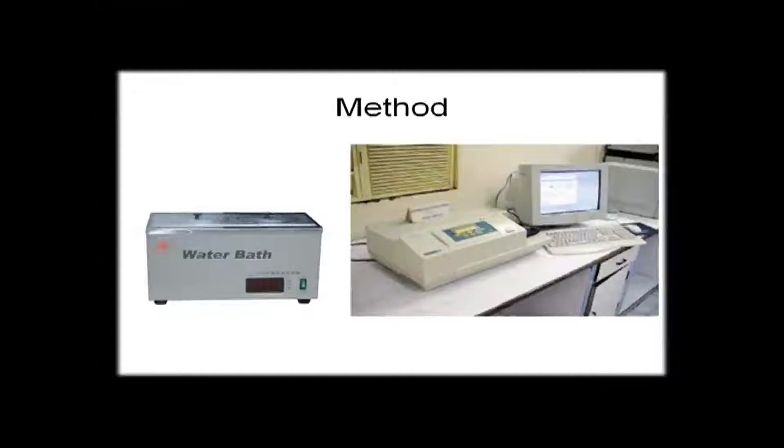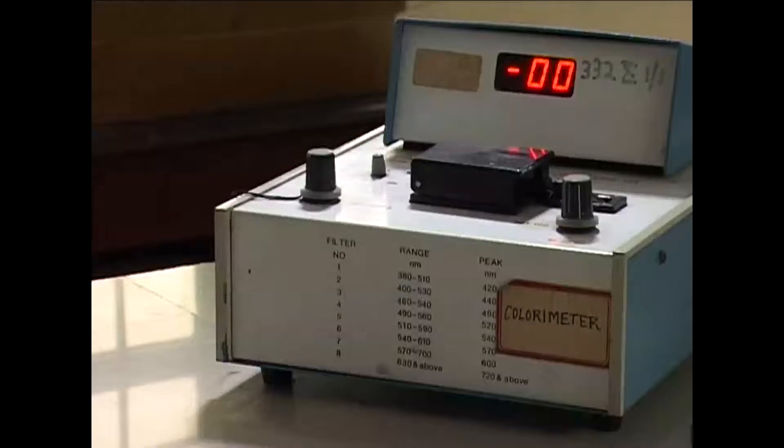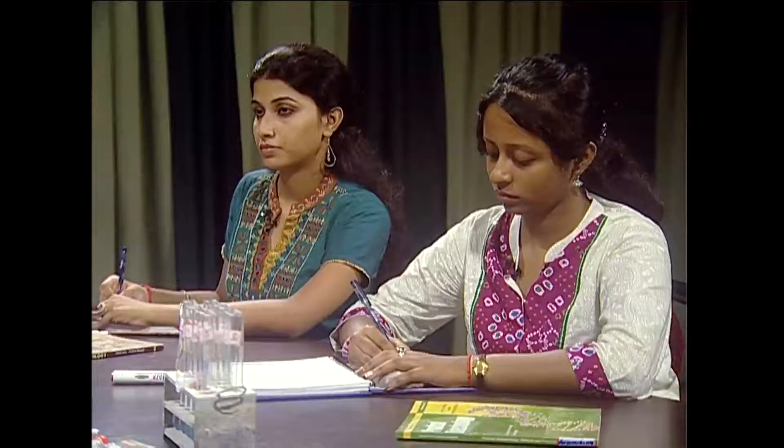The method involves two things: acid hydrolysis with heat, so we need a water bath. And after development of color with diphenylamine reagent, you need a colorimeter or spectrophotometer which can measure the visible blue color at around 595 nanometers.